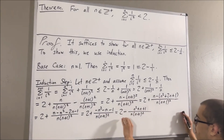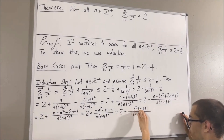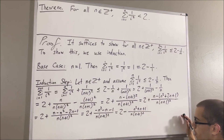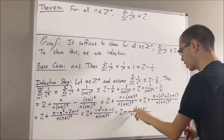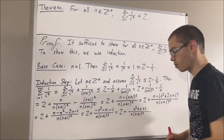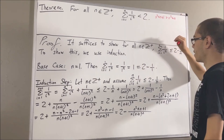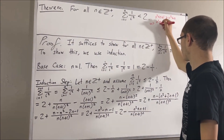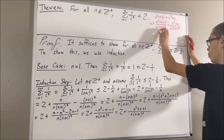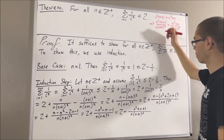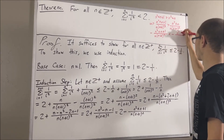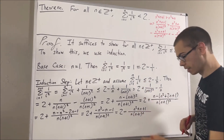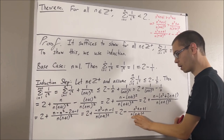Now it turns out that this expression must be less than 2 minus (n squared plus n) over n times (n+1) squared. So we can just get rid of the plus 1. The reason is that n squared plus n plus 1 is greater than n squared plus n. We can divide both sides by n times (n+1) squared, then multiply both sides by negative 1, which flips the inequality. And if we add 2 on both sides, we obtain that this is less than 2 minus (n squared plus n) over n times (n+1) squared.